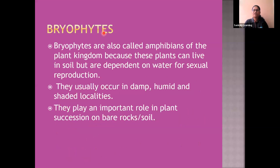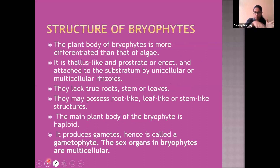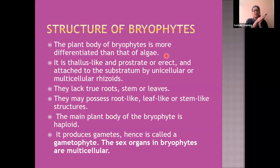Bryophytes are also called amphibians of the plant kingdom because they can live in soil but are dependent on water for reproduction. They usually occur in damp, humid, and shaded localities. They play an important role in plant succession on bare rocks and soil. The plant body of a bryophyte is more differentiated than that of algae — it is thallus-like, prostrate or erect, and attached to a substrate.